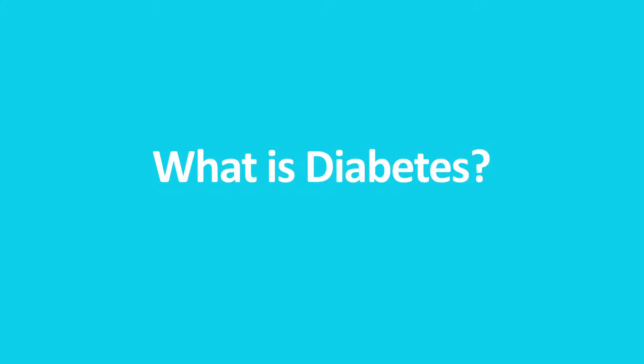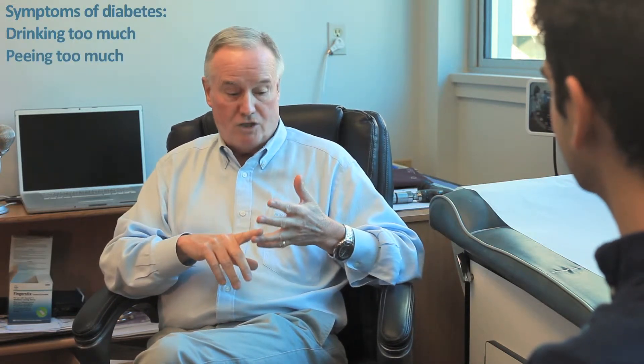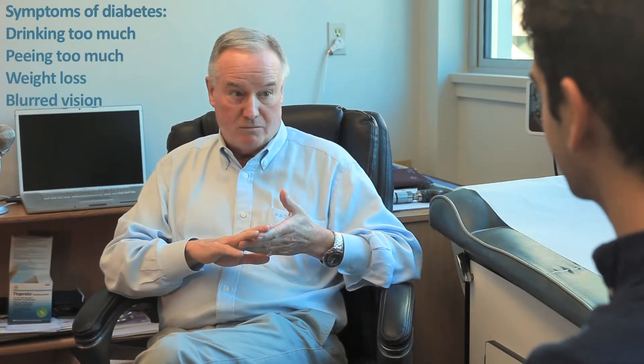Okay, so in a general sense, what is diabetes? Very simply put, diabetes is just too much sugar in your blood, and when there's too much glucose in your bloodstream it causes you to have a number of symptoms: drinking too much, peeing too much, losing weight, having blurred vision.